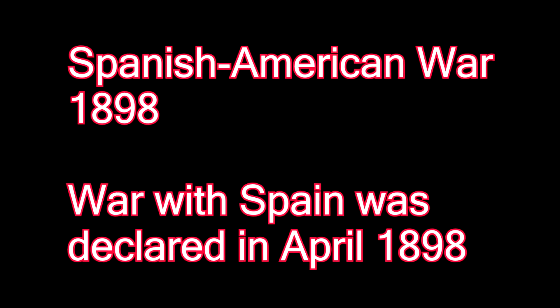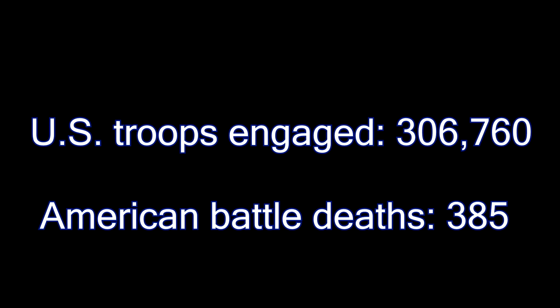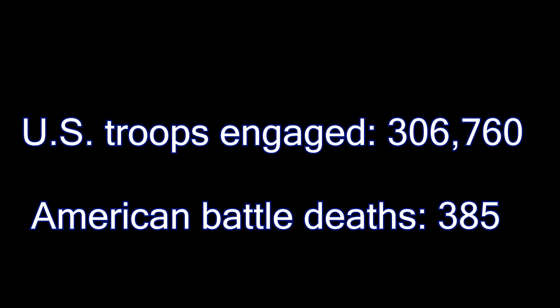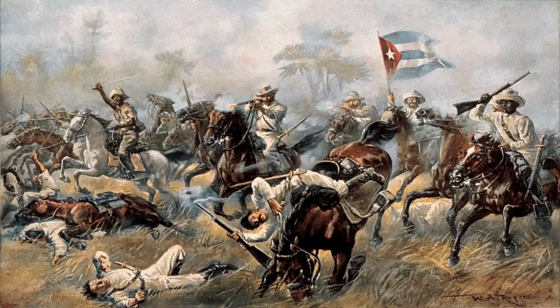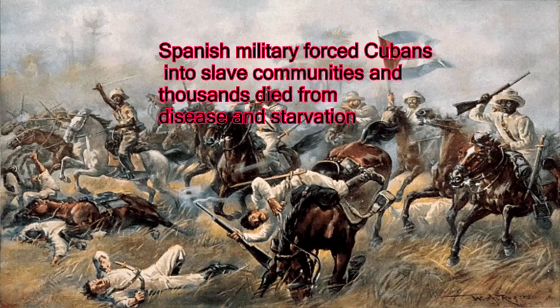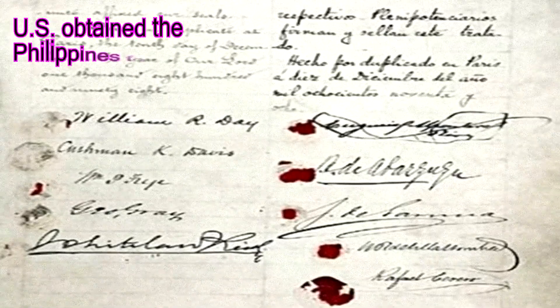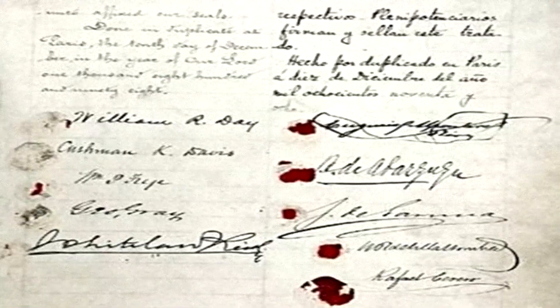Next is the Spanish-American War, 1898. War was declared in April 1898. US troops engaged: 306,760; American battle deaths: 385. Spain declared war on the US because the US supported Cuba's wish to be independent of Spanish rule. The Spanish military had forced Cubans into slave communities where thousands died. American ships destroyed the Spanish fleet off Santiago, Cuba, forcing the city to surrender. The Treaty of Paris was signed in 1898; Cuba was freed, the US obtained the Philippines for $20 million, and Puerto Rico and Guam were ceded to the US.